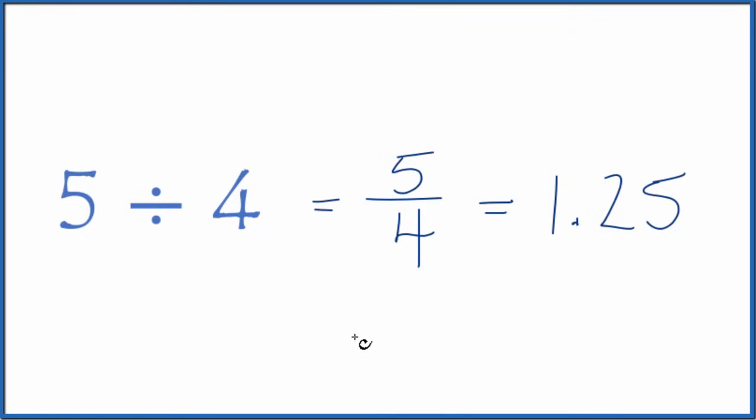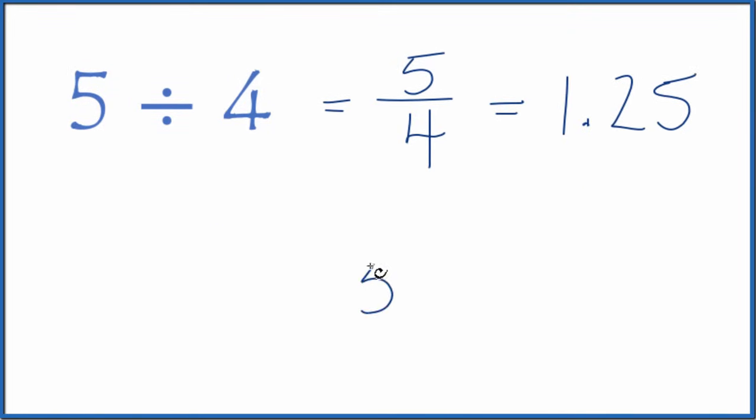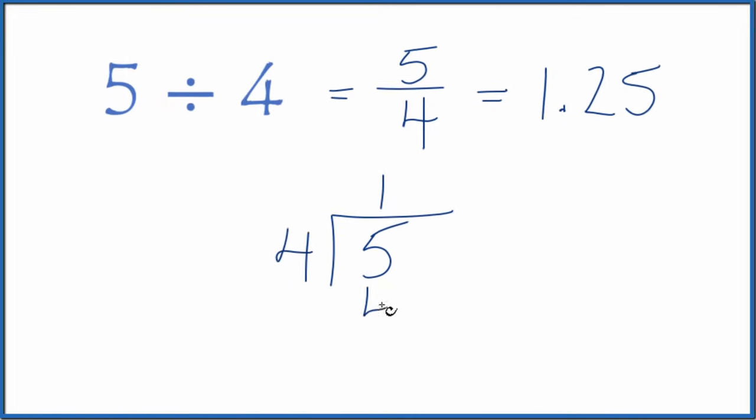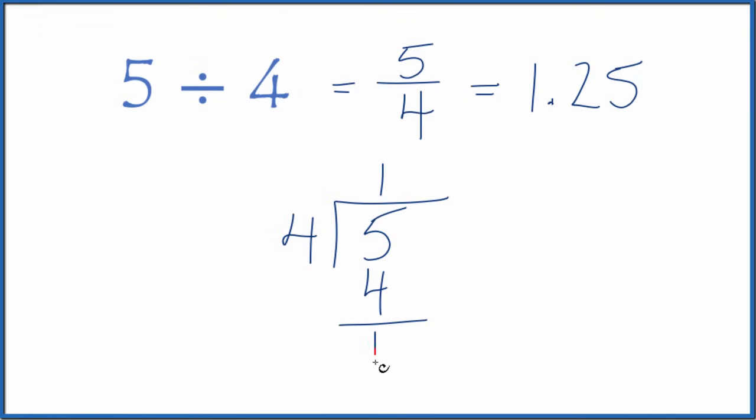We can also do this longhand. We could take 5 and divide 4 into 5 longhand. 4 goes into 5 once, and that leaves 1 left over. 4 doesn't go into 1, so let's call it 10 and put a decimal point here.